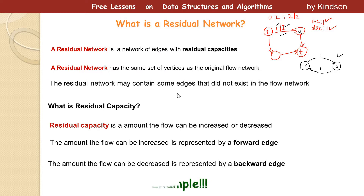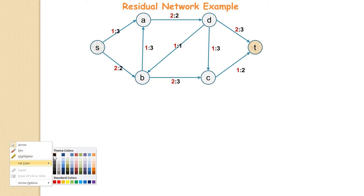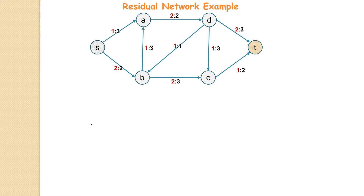Now let's take a typical example. We have a flow network and we want to create a residual network from it. I'm going to use the color blue. In a residual network it will have the same set of vertices, so I'm going to draw the same set of vertices.